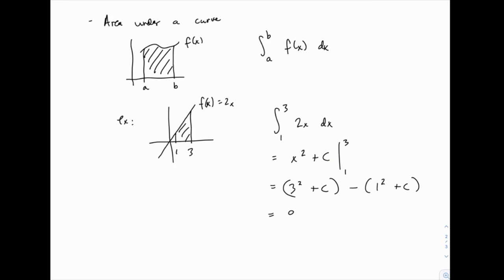So in this case, we'd end up with 9 minus 1, and the answer is 8. That's the area under the function 2x from 1 to 3, which you could also find out geometrically. But for more complicated functions, the integral is the way to go.